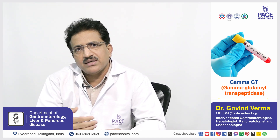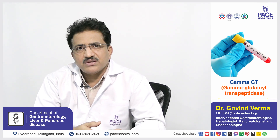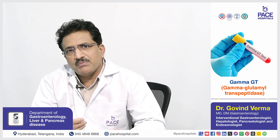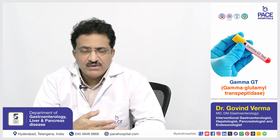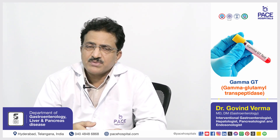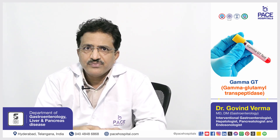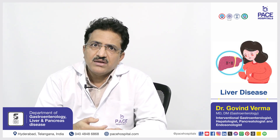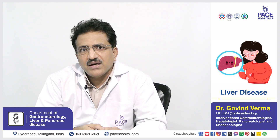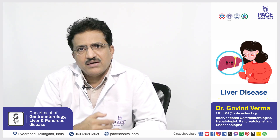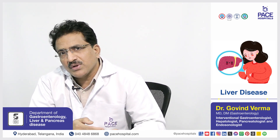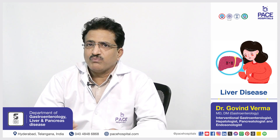Alkaline phosphatase can get elevated in patients with disorders of bone, disorders of the placenta, and disorders of the biliary and hepatocellular tree. Whenever you have a high alkaline phosphatase, GGT can be done to differentiate the source, as GGT gets elevated specifically in liver disease. If GGT is very high and alkaline phosphatase is high, then the source is liver or biliary pathology, not bone.